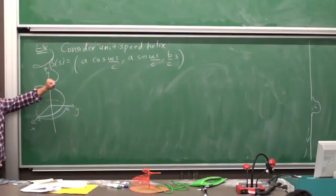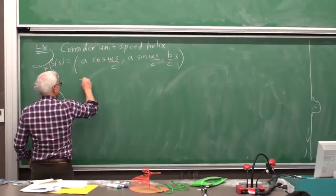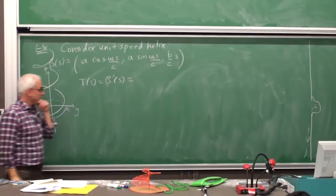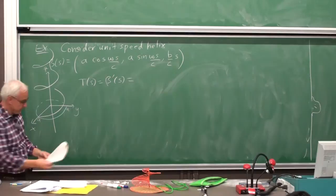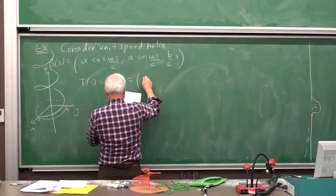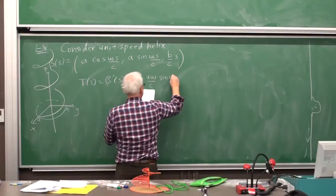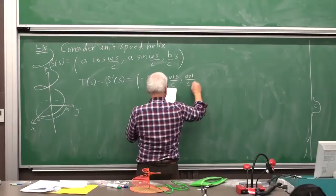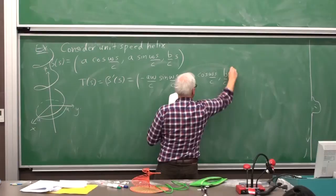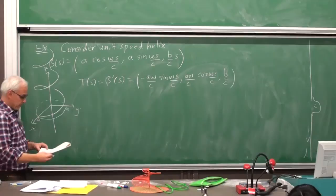Okay, we have to adjust the constants to get a unit speed curve. So to figure out how that works, let's calculate T of S, which is beta prime of S. That's going to be our unit tangent vector. So the derivative is differentiating with respect to S. So we get minus A W C comes out front times sine of W S over C, and then A W on C times cosine W S on C, and just B over C in the Z coordinate.